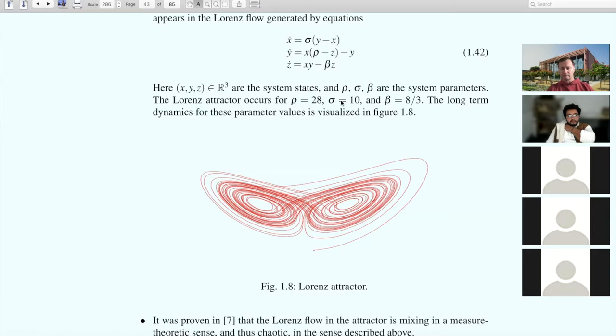For a particular set of these constants—rho equals 28, sigma equals 10, and beta equals 8 over 3—we know rigorously now, since about 12 years ago, that the dynamics on the Lorenz attractor, depicted here as a single trajectory spinning between the two wings, is mixing.